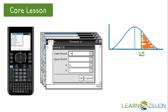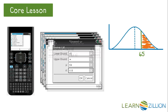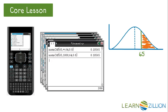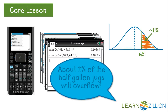Now we need to enter the numbers specific to this problem. We use 65 as the lower bound, infinity or some arbitrary large number like 1,000 as the upper bound, 64 for the mean, and 0.8 for the standard deviation. The function returns 0.10565, which means that about 11% of the jugs will have a volume exceeding 65 ounces. The manufacturer can expect that about 11% of the jugs will overflow.